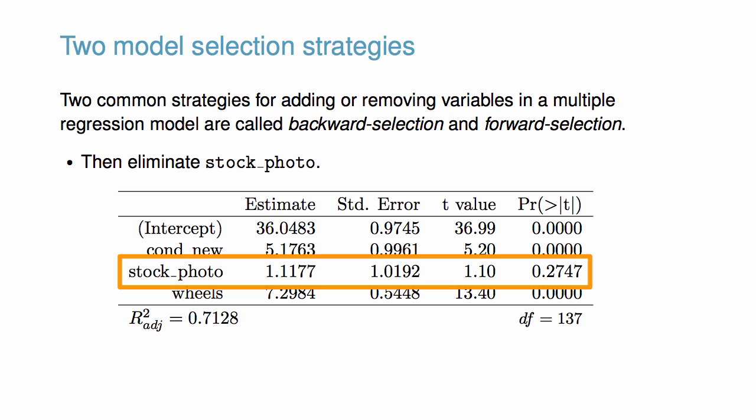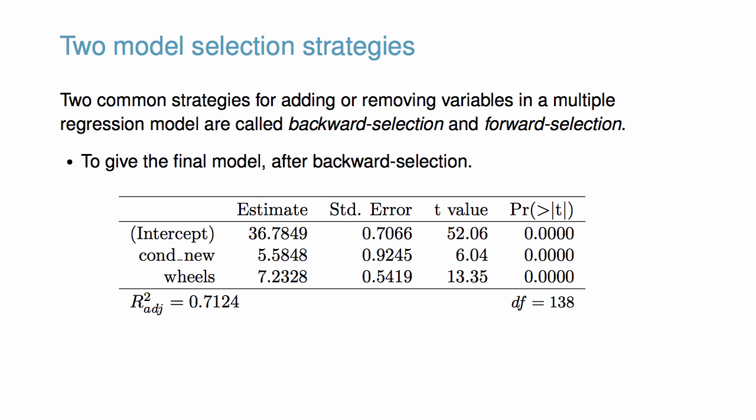Since stock_photo now has the largest p-value and that p-value is above 0.05, we drop it from the model. Now, after refitting the model one more time, all of the variables have p-values below 0.05 and we are left with a final model.